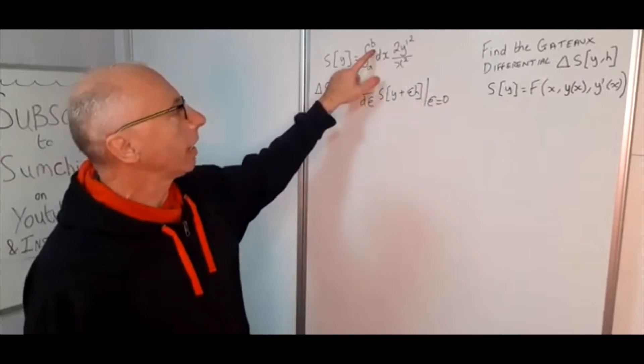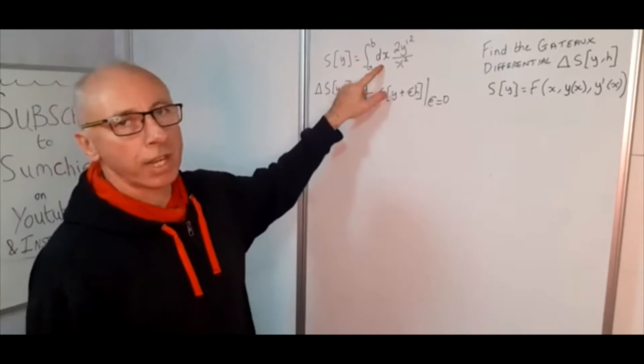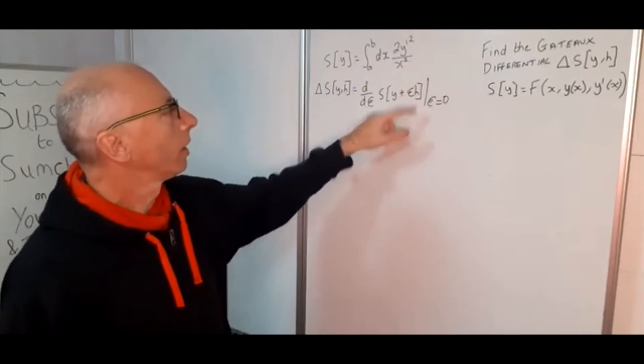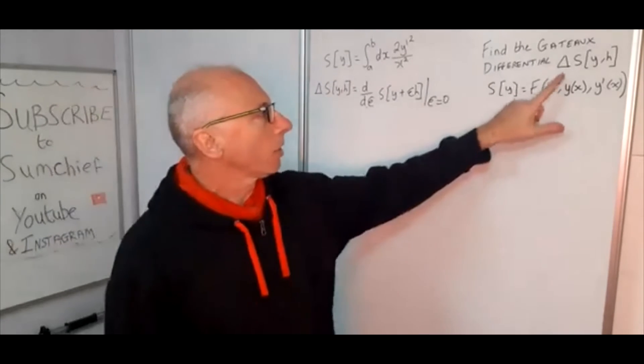The boundaries are a and b with regards to x. We have got 2y prime squared over x squared and then Gateaux differential.